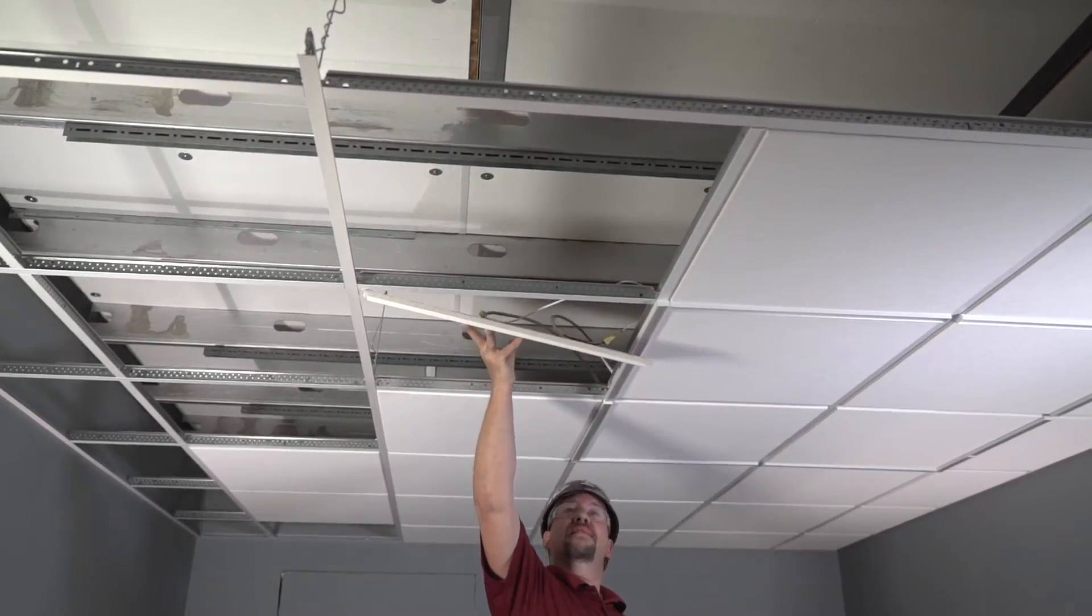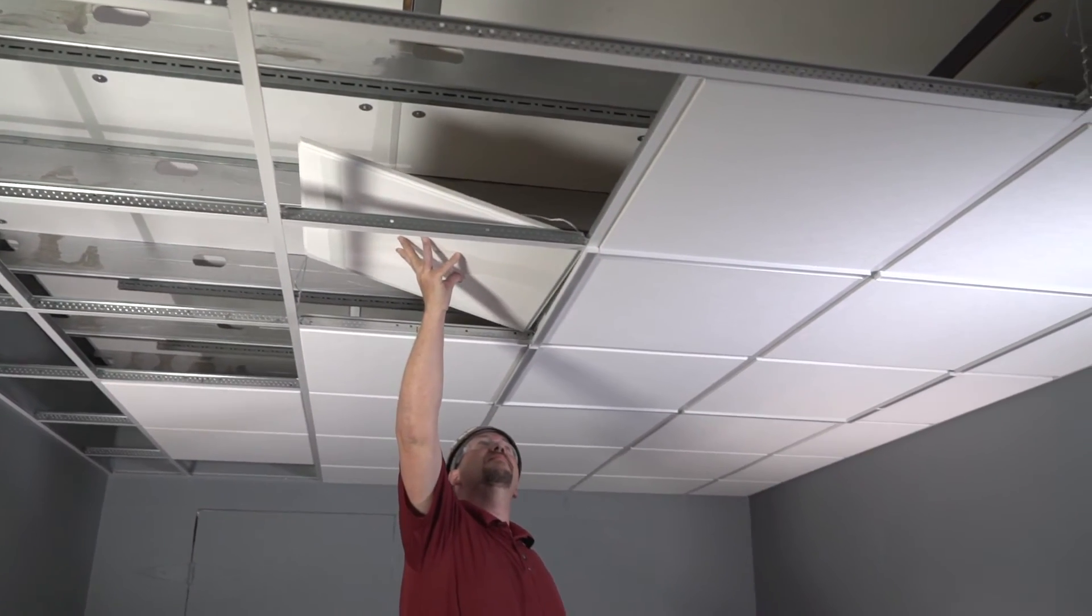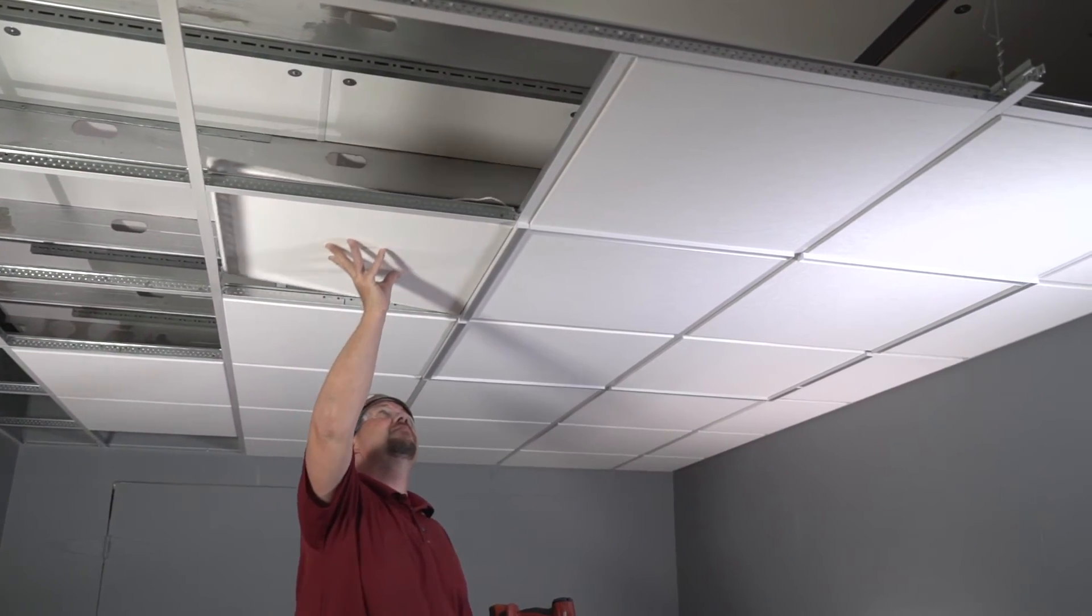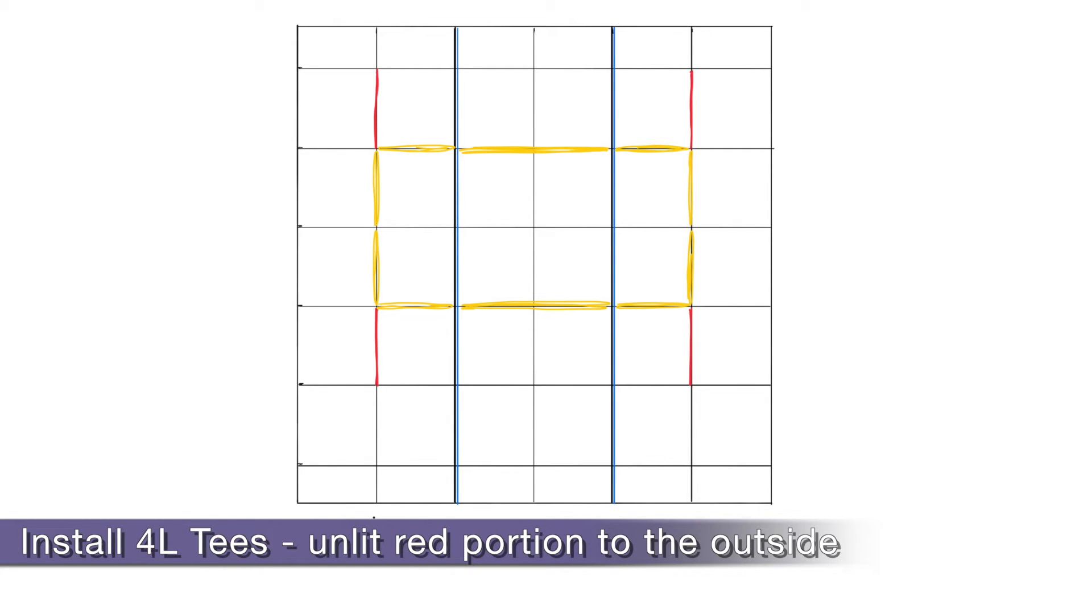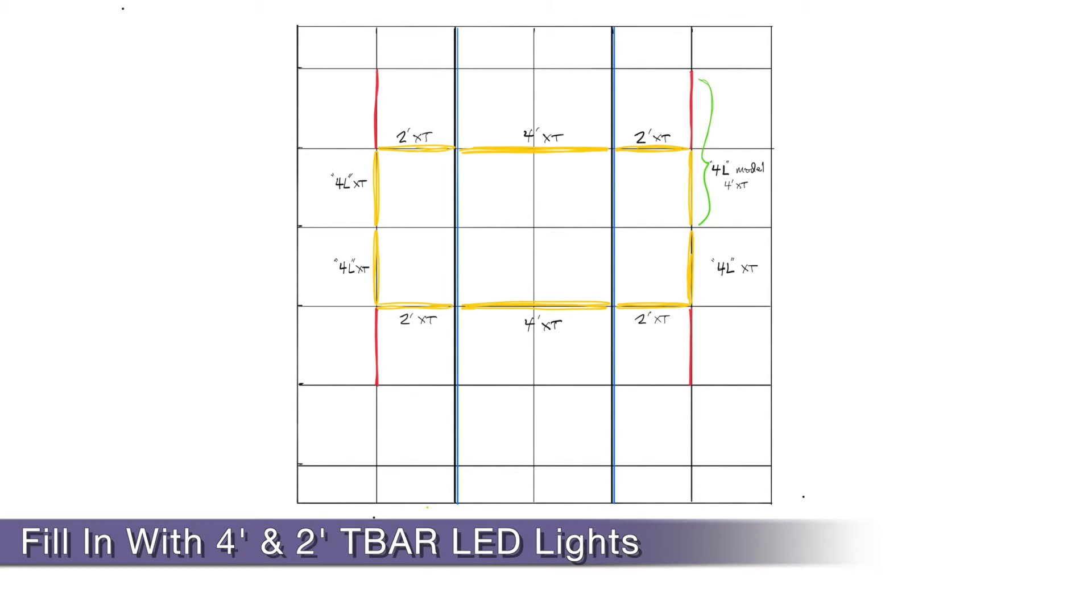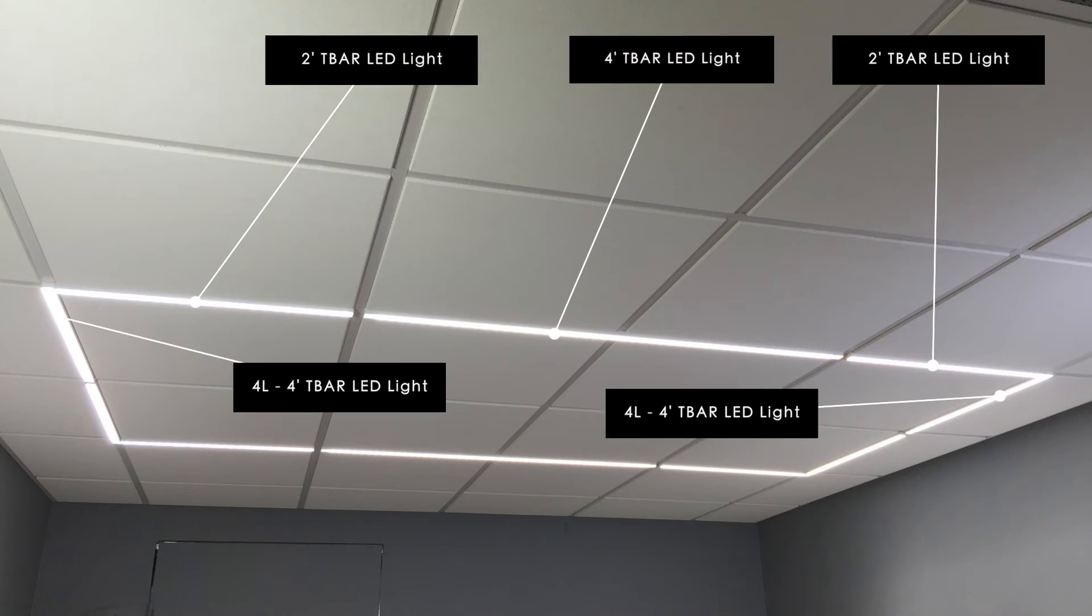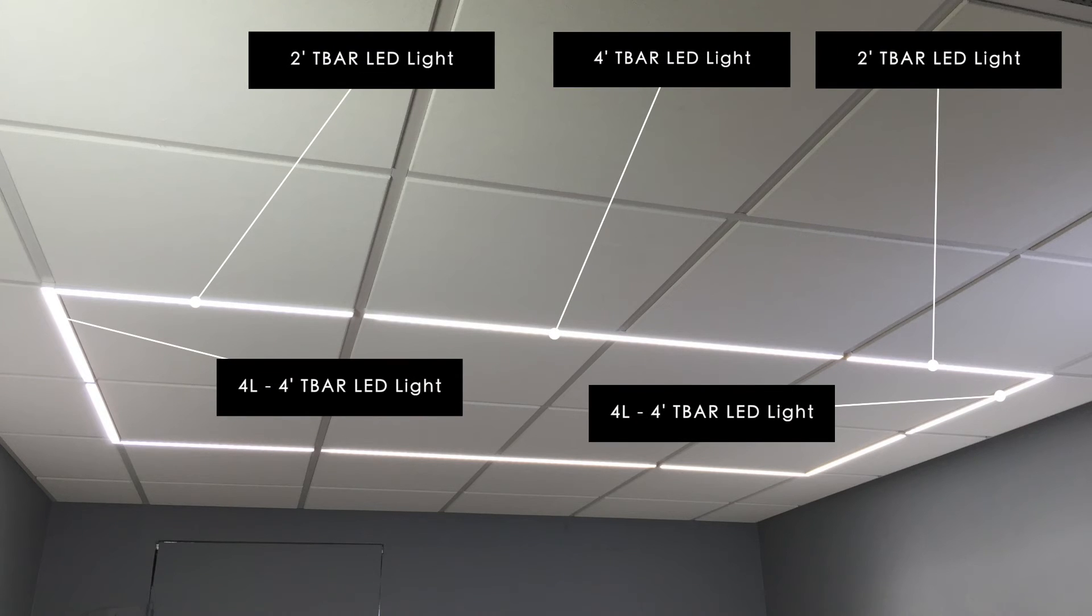T-Bar LED lights are perfectly suited for renovation projects where unnecessary cross T's can be swapped out for LED T-Bars and new ceiling panels. If your space is larger and requires a rectangular run rather than a square, four LTs are located at the 90-degree corners while four-foot and two-foot LED T-Bars are filled in to create your rectangular geometric pattern.